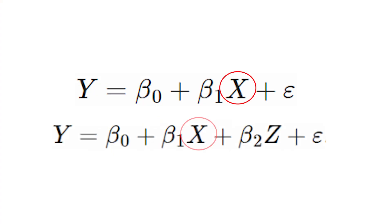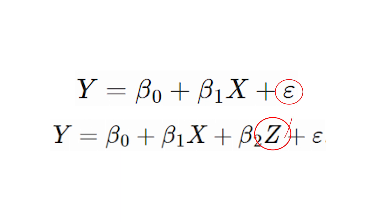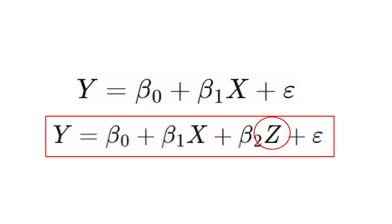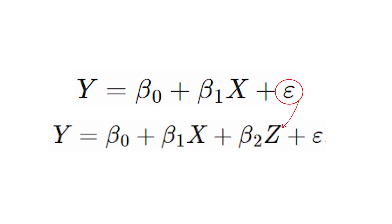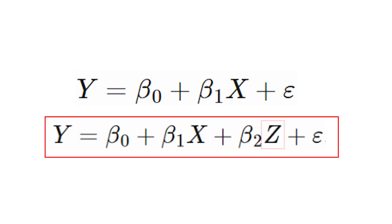Let's convert that idea to something more specific to regression. What does it mean to close a backdoor path by controlling for a variable? In the context of regression, that means adding that variable as a predictor — a control variable. If we go from a model where x is the only predictor to one where we have both x and z as predictors, and z is part of the data generating process for y, then in that first model z is still there — hidden in the error term. In the second model, we have simply moved z out of the error term into the model itself.